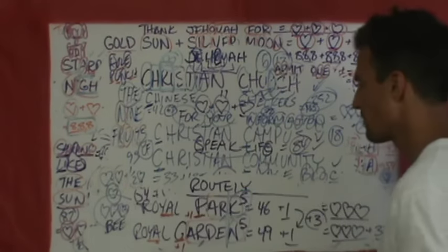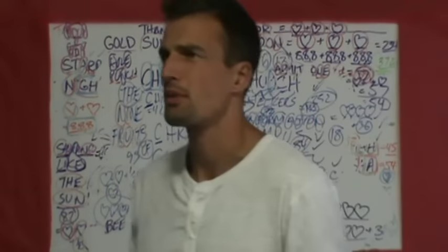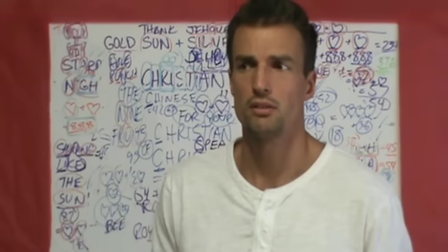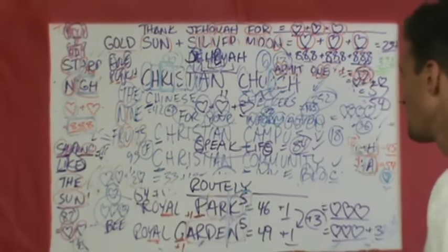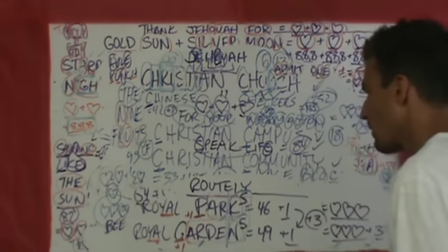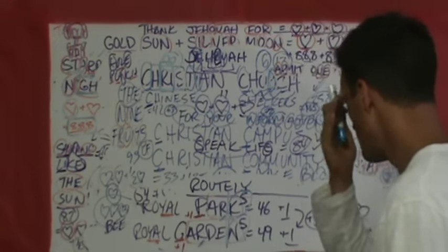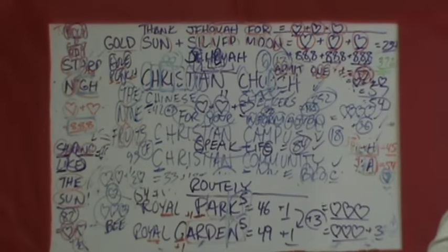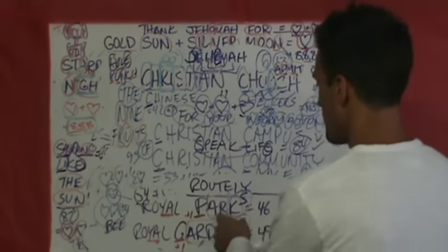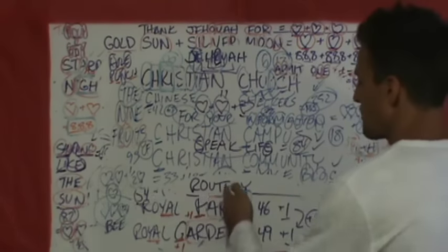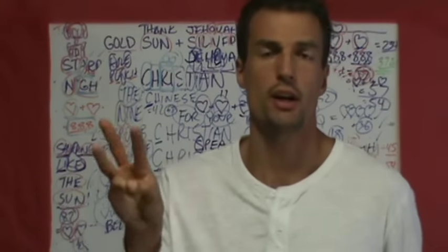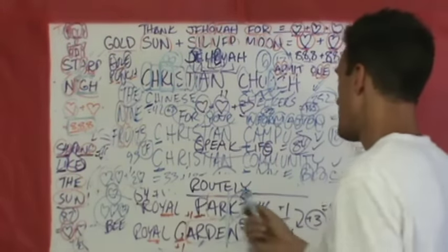The P-A-R prefix of both words is 35 (P=16, A=1, R=18), which fortifies the number three because it is a product of five and seven — a semical set of the third prime. Parks and gardens — that's so cool.